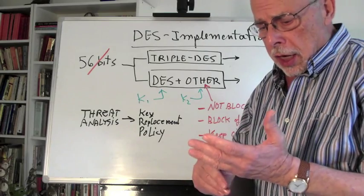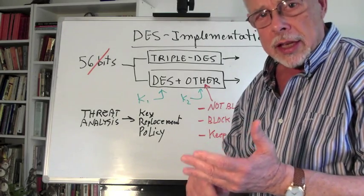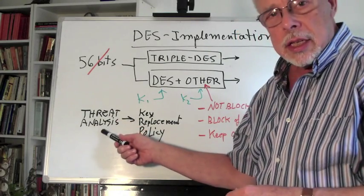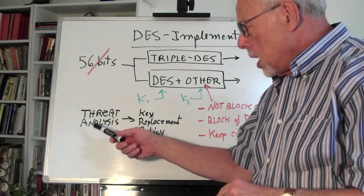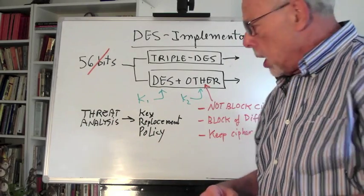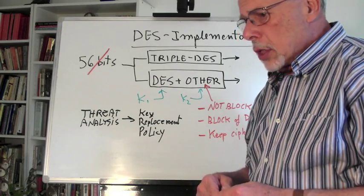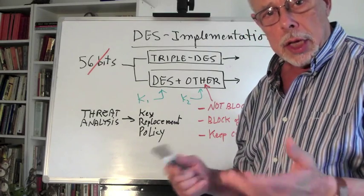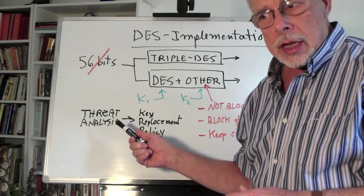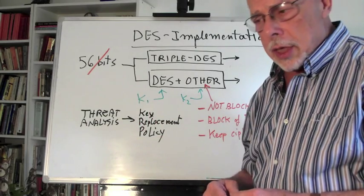Always precede implementation with a thorough threat analysis. Threat analysis is not a vulnerability analysis. You may be very vulnerable in a place where there is no great profit to the hacker, so it's of no great concern. Or there is a great profit, but the hacker doesn't have the required resources. All this goes into threat analysis — it's a must before you can come up with a key replacement policy.